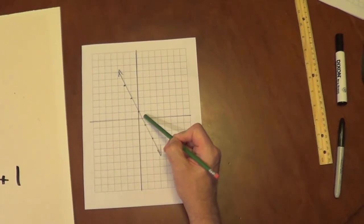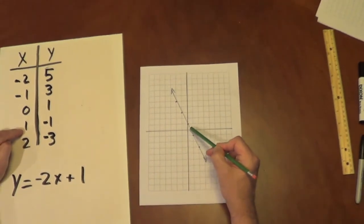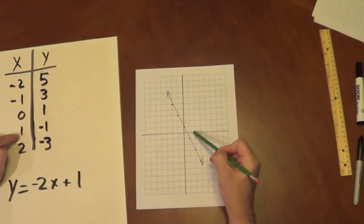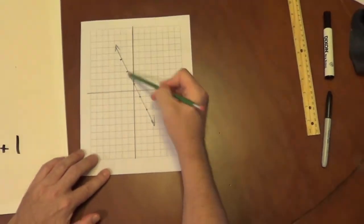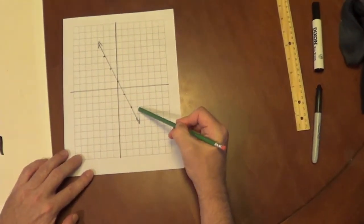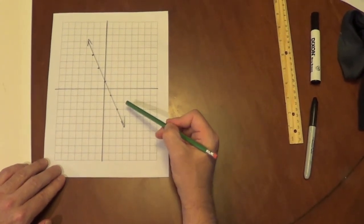Then I have x equals 1 and y is negative 1, the point there. And then my last point is x equals 2. 1, 2. And y equals negative 3. 1, 2, 3. So I plotted those five points and I drew my line. And that's the slope, a negative 2 slope, with a y-intercept of 1.